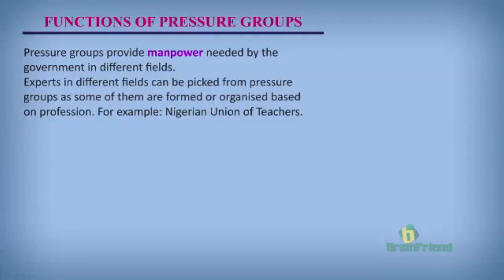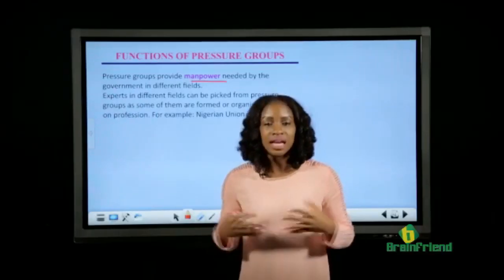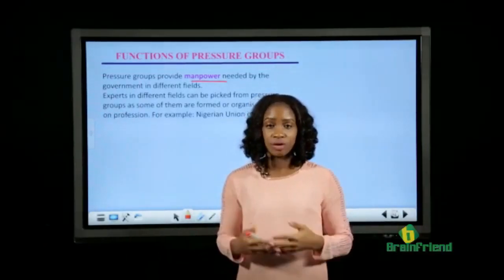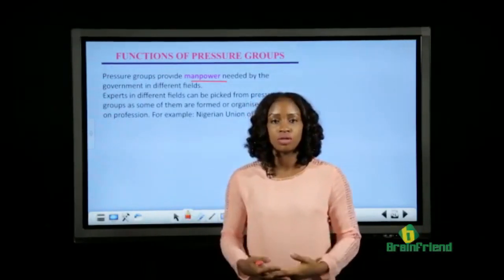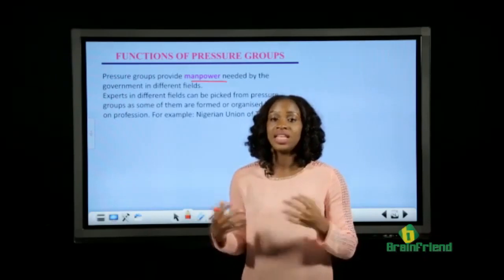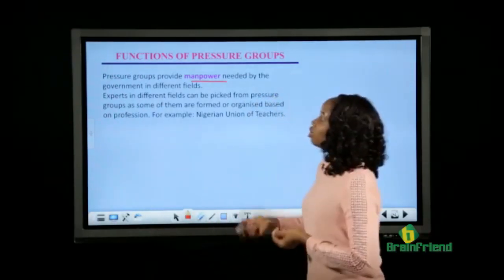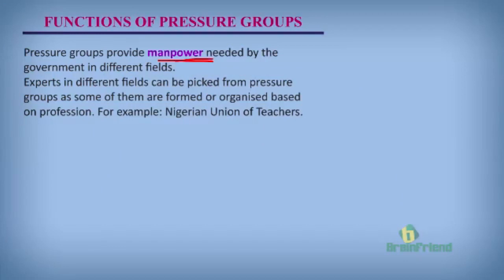The last function of pressure groups is that they provide manpower needed by the government in different fields. Some pressure groups are formed based on profession — for example, the Nigerian Bar Association for lawyers, and the Nigerian Union of Teachers for teachers. If experts in these different fields are needed by the government, they can easily go to these unions or pressure groups and pick an expert. So pressure groups provide manpower needed by the government, especially when they need an expert to provide information or a solution in a particular field.